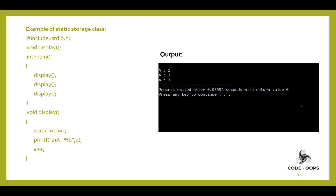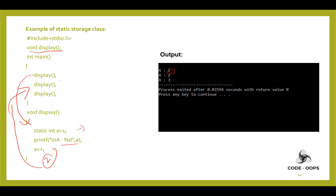Let's see an example of the static storage class. Inside the main function, the function is called three times. On the first call, static int a is initialized to 1, printed as 1, then incremented to 2. On the second call, 'a' retains the value 2, is printed as 2, then incremented to 3. On the third call, 'a' is 3 and is printed as 3. This demonstrates that static variables hold their value between multiple function calls.